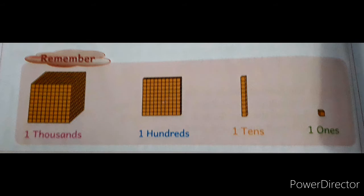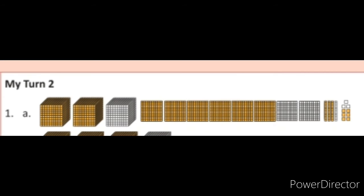Dear Students, to solve Question No. 1A, remember these points: One block equal to 1000, one square equal to 100, one rod equal to 10, and one small cube equal to 1. So, color the boxes like this in Question No. 1A to represent the number 2636.